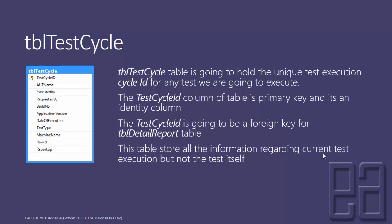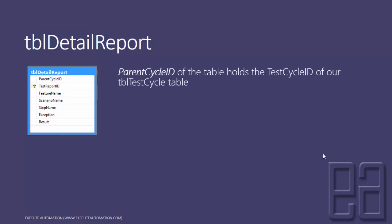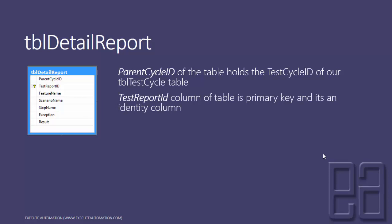So where are the test results going to be saved? That's where TBL Detail Reports comes into the picture. The parent cycle ID column holds the test cycle ID from our TBL Test Cycle table. The test report ID column is the primary key and it's an identity column, meaning this column automatically increments the value — you don't really have to specify that. It also has a relationship as a foreign key to the TBL Failure Report table.